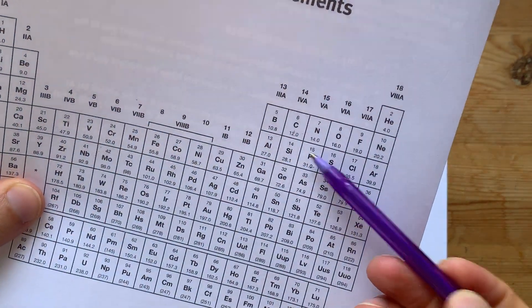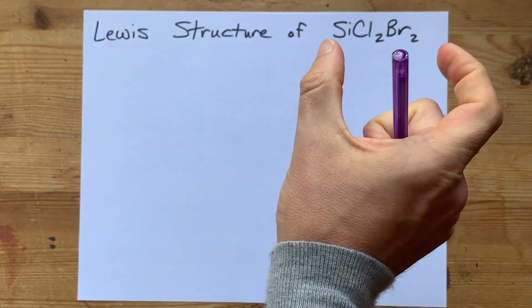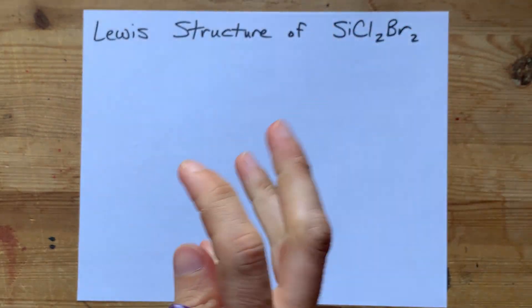Now I'm just going to point out that silicon, chlorine, and bromine are all non-metals, so this is going to be a molecular compound. They're going to share electrons.